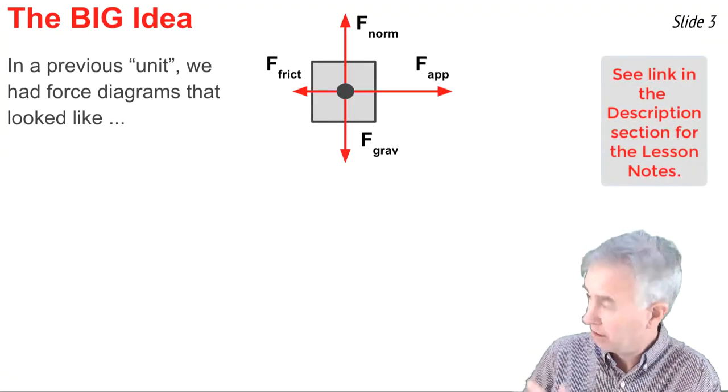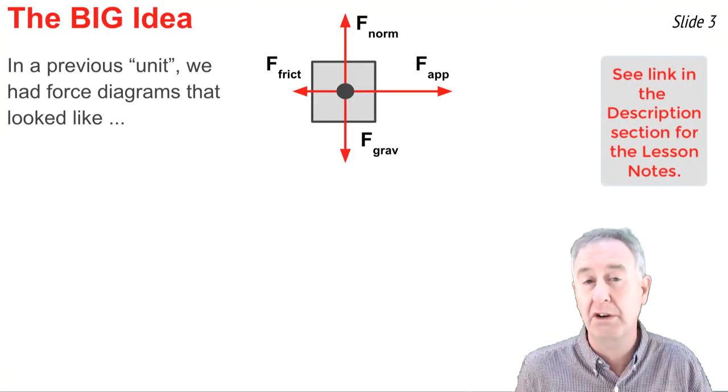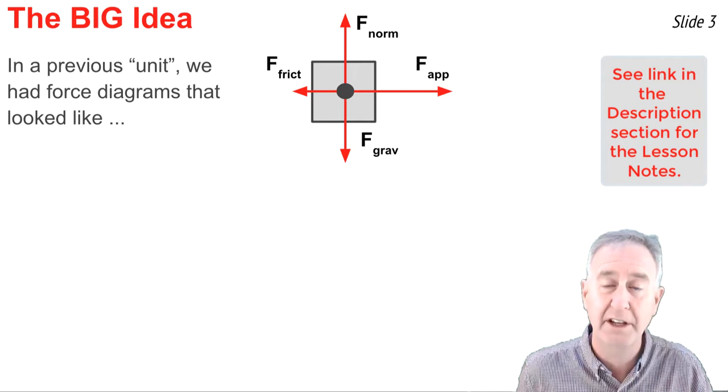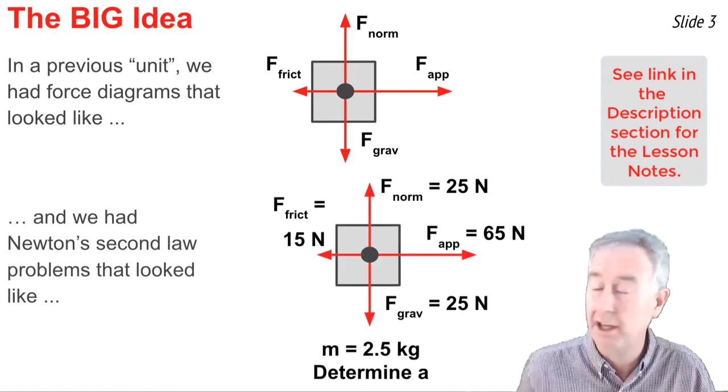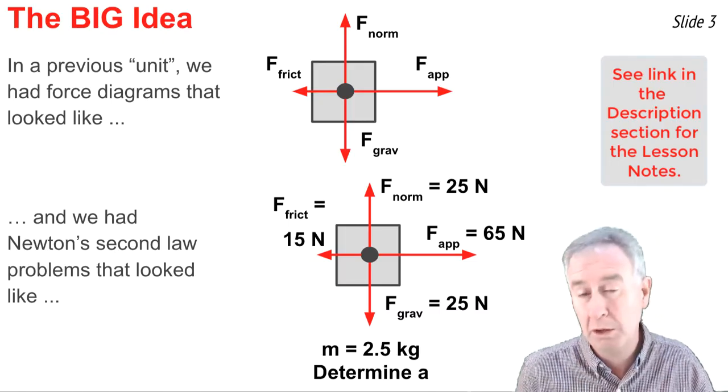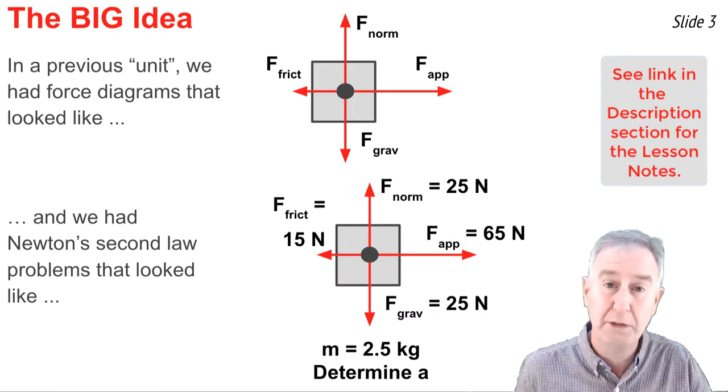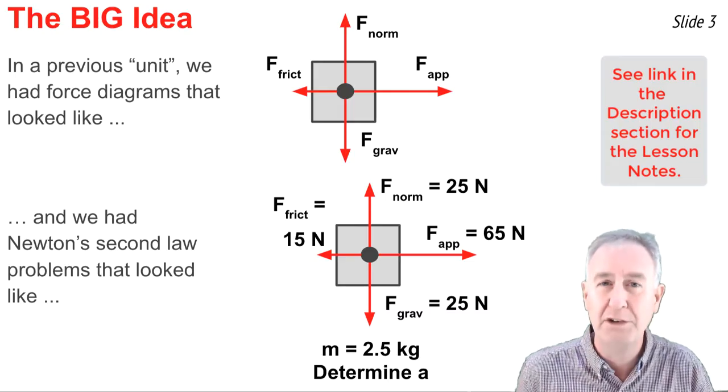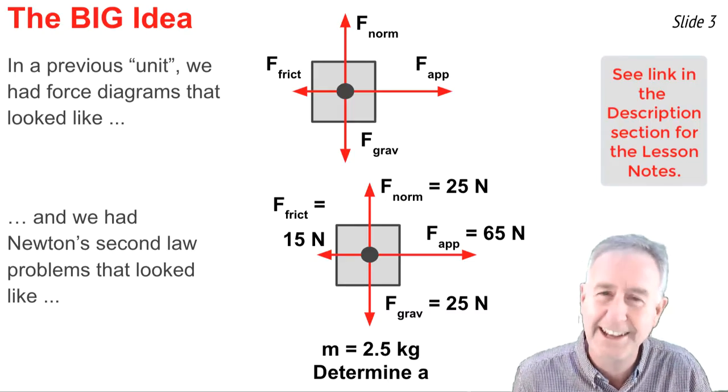In a previous unit, we saw force diagrams that looked like this, with the forces going up, down, and right and left. And we saw force problems that looked like this. Again, all the forces are up and down and left and right, and we have to determine the acceleration, which means we have to find the vector sum of all the force vectors, the net force.